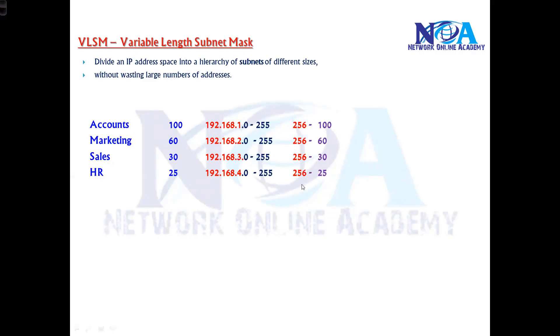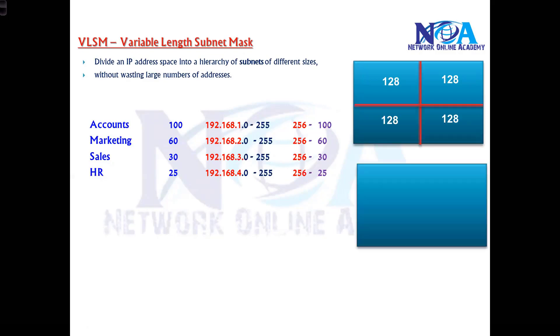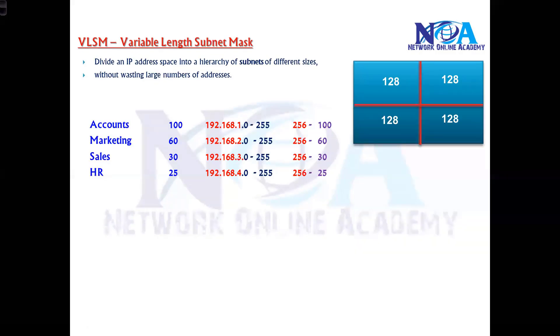In FLSM, we divided them into equal sizes. As per this requirement, I can divide equally. According to the 2 power table - 2 to the power of 6 is 64, 2 to the power of 7 is 128.